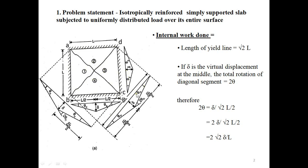Here you can see the deflection diagram — this is the deflection of the yield line, and this is the deflection of the overall slab. Delta is the deflection here. The length of the square slab is L, so the length of the yield line is √2·L.